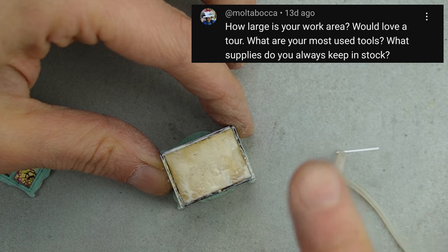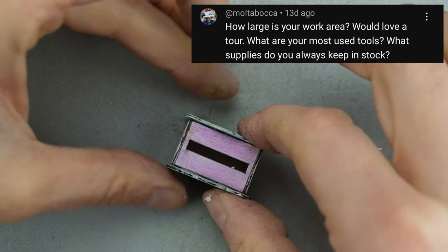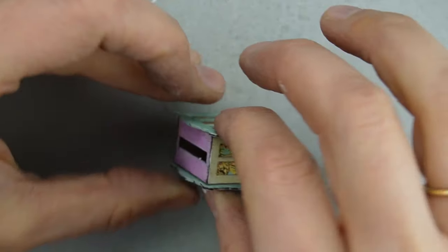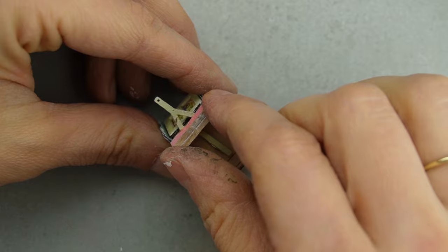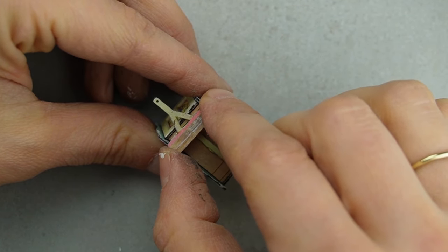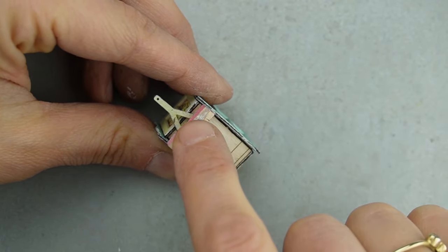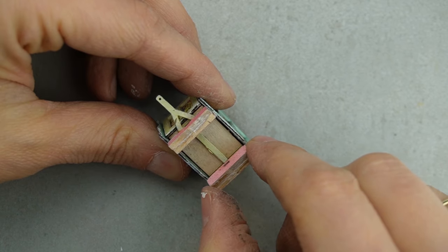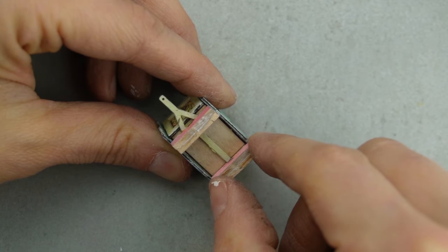My workspace is a pretty good size because I have an entire bedroom to work in. Since we don't have any kids, we have spare bedrooms. My most used tools would be my X-Acto knife, my heat gun for drying things and curing clay because I'm very impatient, and my miter shears.